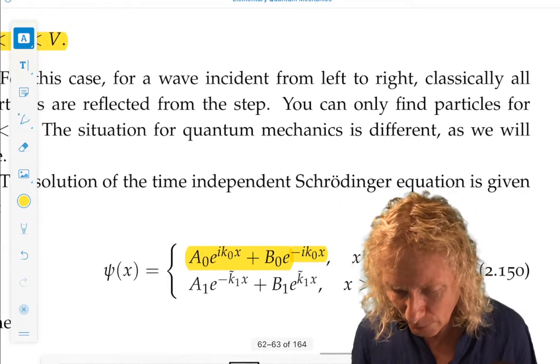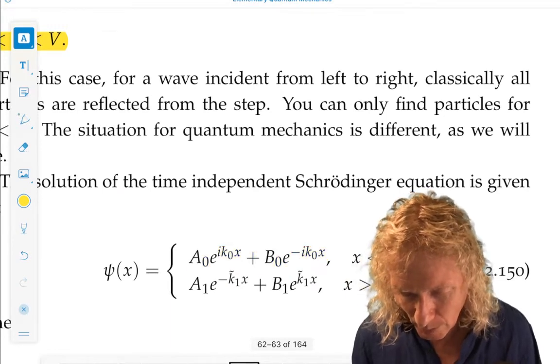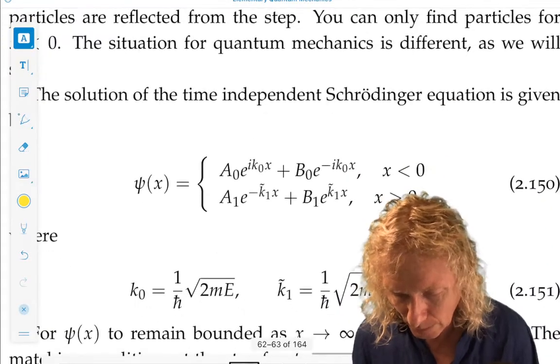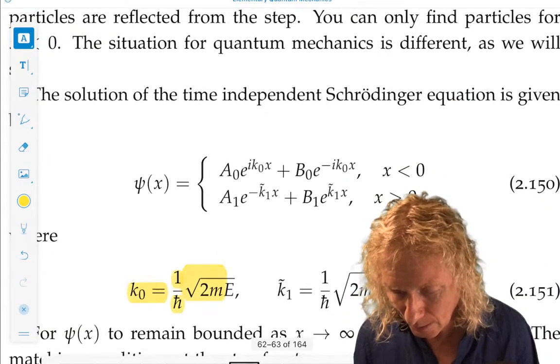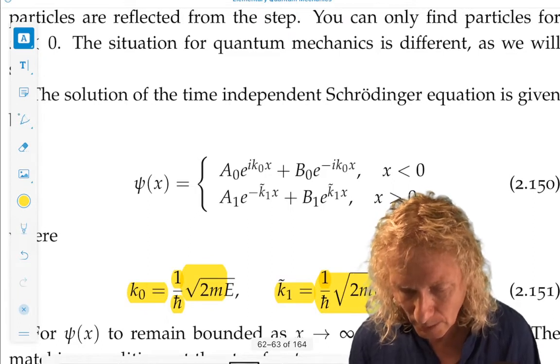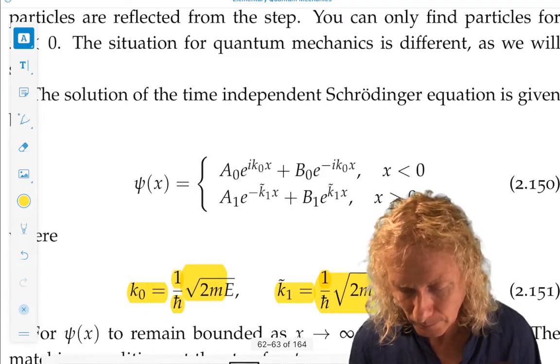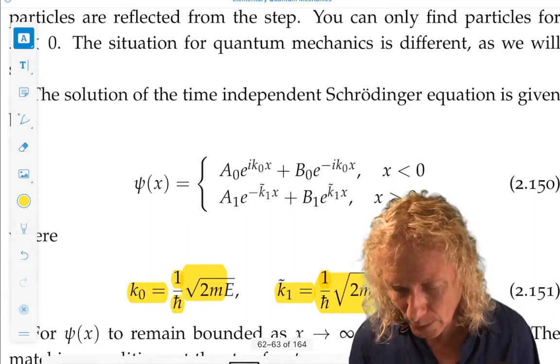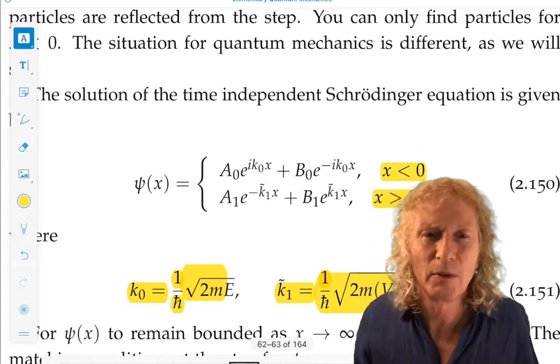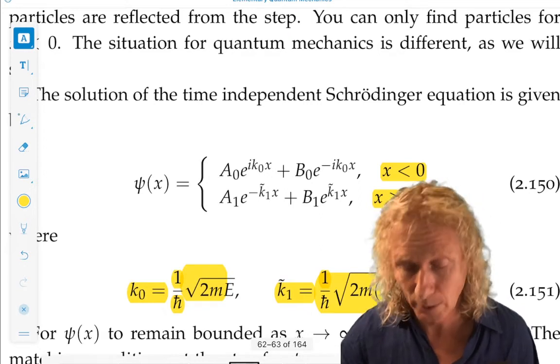So the same strategy we carried out earlier. We write down the wave function. We now redefine appropriate for this case, these wave numbers. We write down the wave function in the two regions, x less than zero and x greater than zero. So x less than zero is the same as the previous case because there's no potential there.